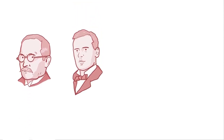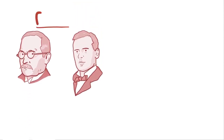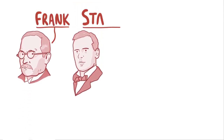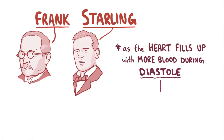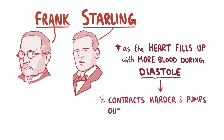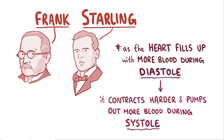More than a century ago, two physiologists, Otto Frank and Ernest Starling, discovered that as the heart gets filled up with more blood during diastole, it contracts harder and pumps out more blood during systole. Naturally, they came up with the Frank-Starling Law to explain this relationship.